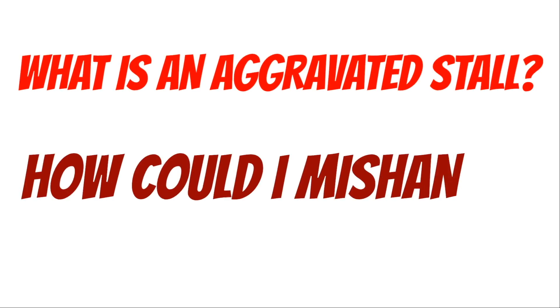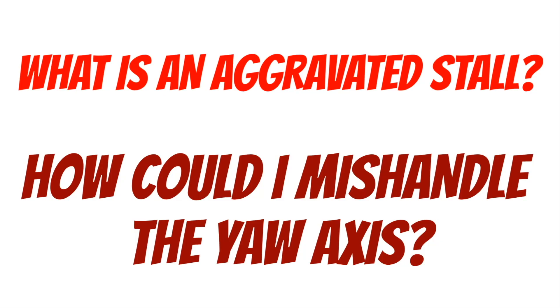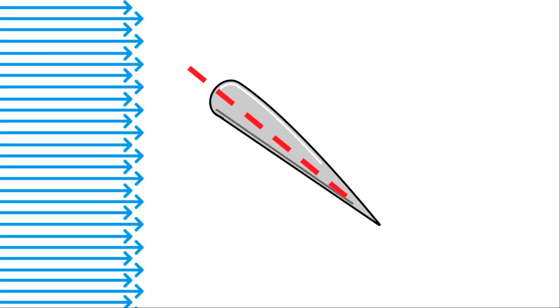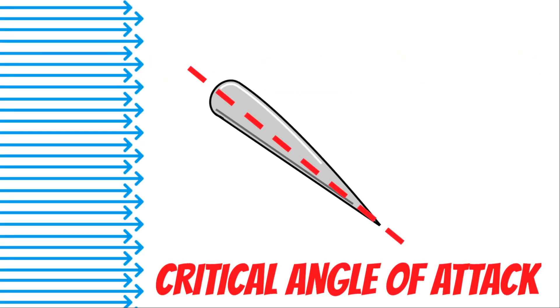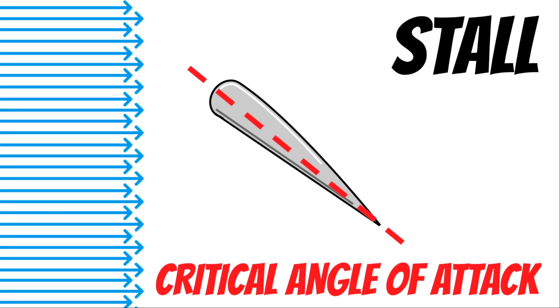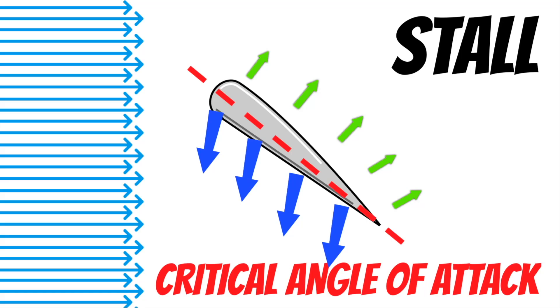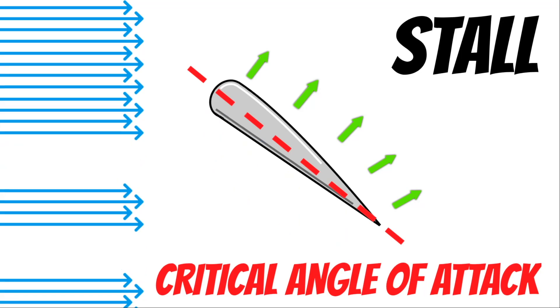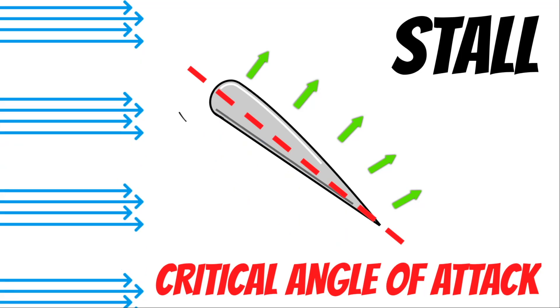You might be asking yourself: what is an aggravated stall and how could I mishandle the yaw axis? Let's talk about the aggravated stall first. If you remember from the last lesson, when the wings hit their critical angle of attack and the airplane stalls, the wings are still creating some lift, but not enough to overcome the weight of the aircraft. But if the airspeed continues to deteriorate and the angle of attack continues to increase, your wings are going to be producing even less lift.